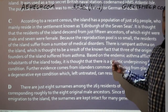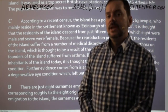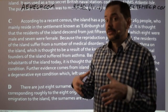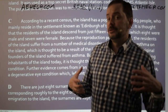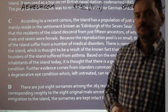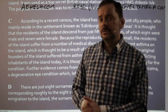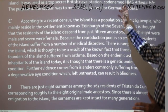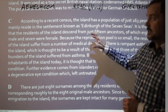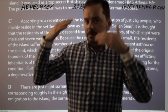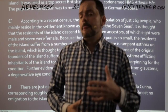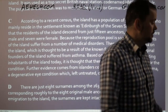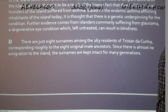According to a recent census, the island has a population of just 263 people who mainly reside in the settlement known as Edinburgh of the Seven Seas. It is thought that the residents descend from just 15 ancestors, eight male and seven female. Because the reproduction pool is so small, residents suffer from a number of medical disorders — rampant asthma, thought to be genetic, and glaucoma, a degenerative eye condition which left untreated can result in blindness.